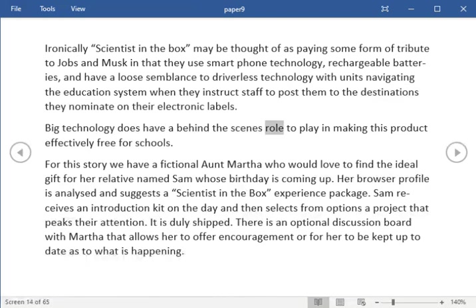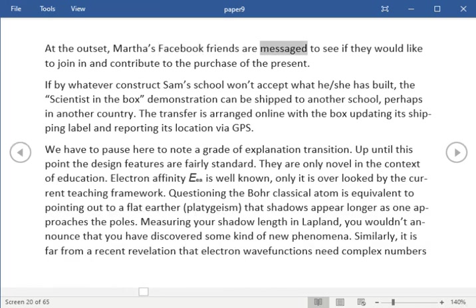Big technology does have a behind the scenes role to play in making this product effectively free for schools. For this story we have a fictional aunt Martha who would love to find the ideal gift for her relative named Sam whose birthday is coming up. Her browser profile is analyzed and suggests a scientist in the box experience package. Sam receives an introduction kit on the day and then selects from options a project that piques their attention. At the outset Martha's Facebook friends are messaged to see if they would like to join in and contribute to the purchase of the present. If by whatever construct Sam's school won't accept what he or she has built, the scientist in the box demonstration can be shipped to another school, perhaps in another country. The transfer is arranged online with the box updating its shipping label and reporting its location via GPS.